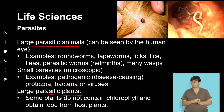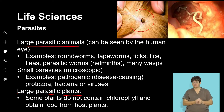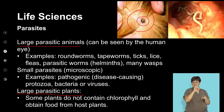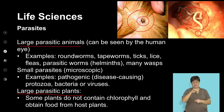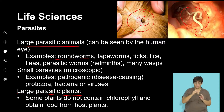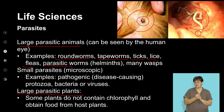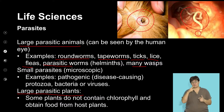When we look at macroscopic parasites — those that can be seen with the eye — here we have an image of a flea on a domestic dog. Fleas or ticks live off dogs, accessing blood for their nutrients. Here we also see an image of the gastrointestinal tract of a dog showing a tapeworm, which is a parasite found in the digestive system. Examples include roundworms, tapeworms, ticks, lice, fleas, parasitic worms such as helminths, and many wasps — all part of your large parasites that feed off animals.